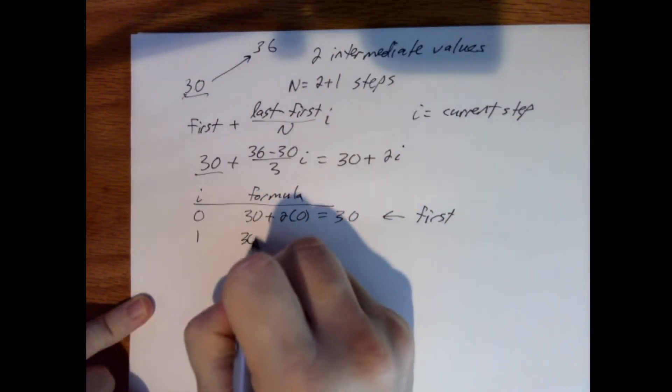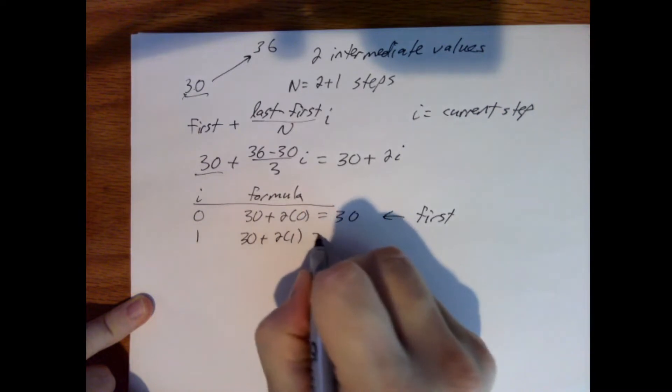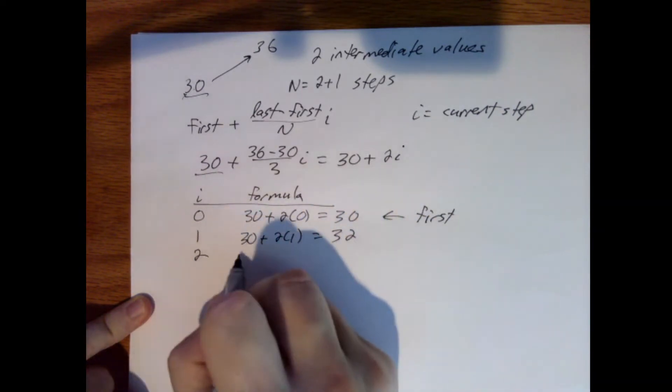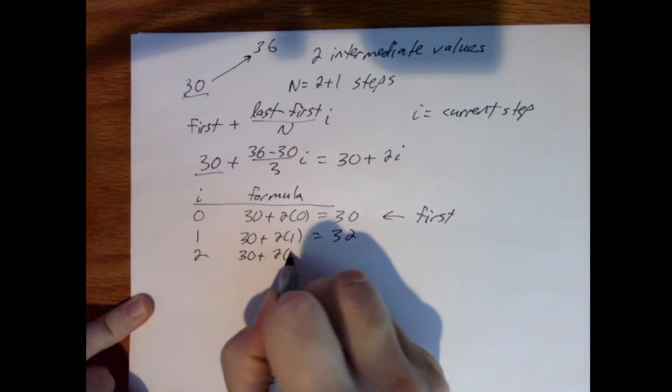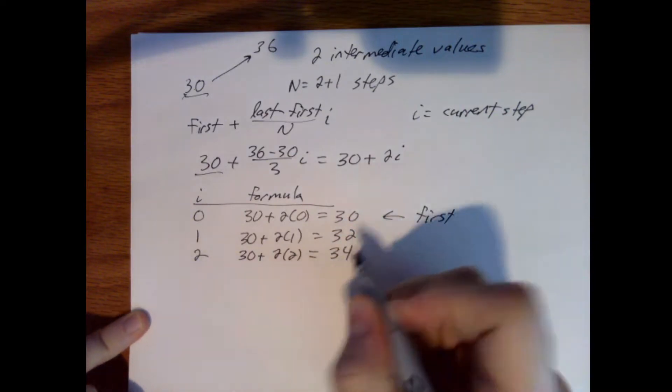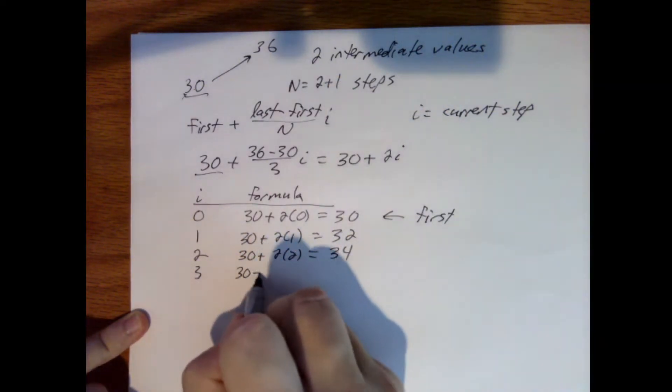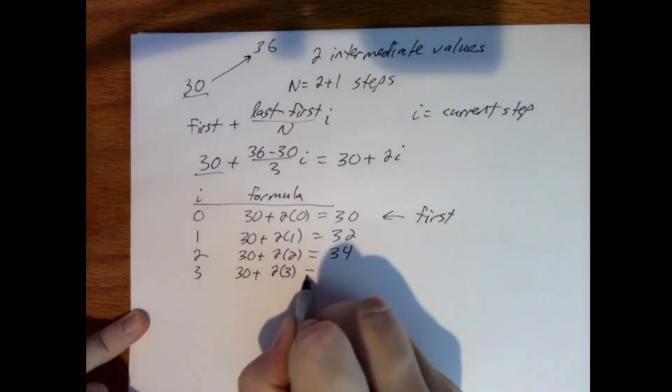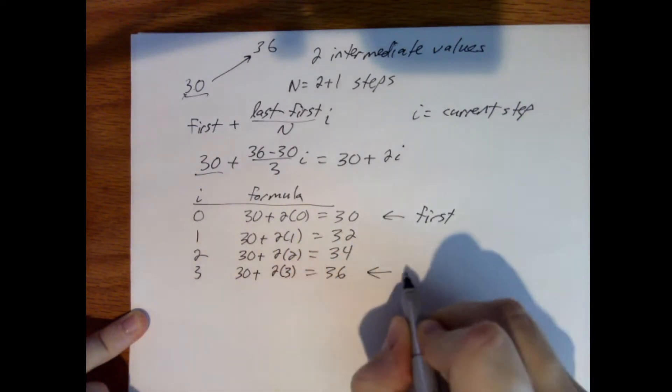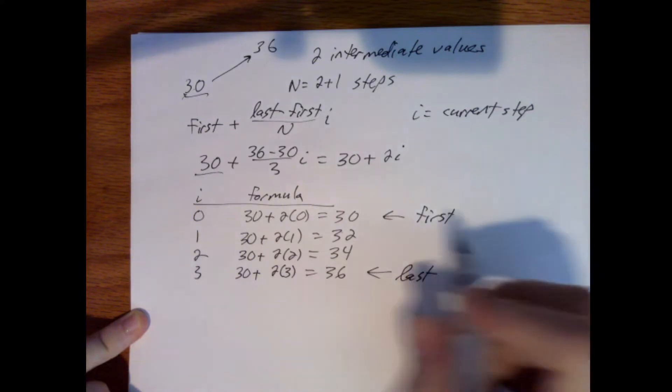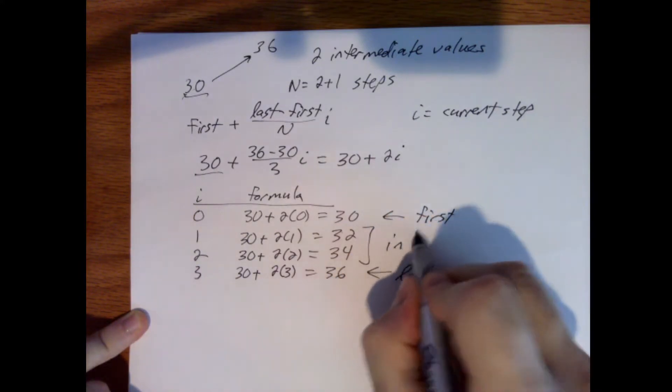When i is 1, we have 30 plus 2 times 1 equals 32. When it's 2, we have 30 plus 2 times 2 equals 34. And when it's 3, which is our n, we have 30 plus 2 times 3 equals 36. This is the last value and these are the intermediate values.